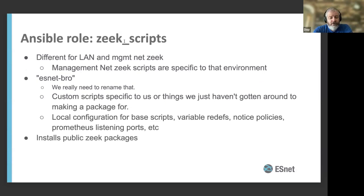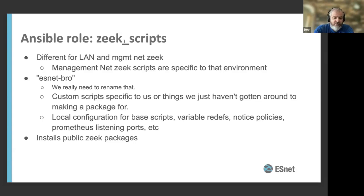Finally, the last role installs the Zeek scripts. It feels like maybe this should have gone into the other Zeek role, but there's a lot of different customization depending on where on the network the systems are. The management Zeek scripts are so specific — they really don't see that much traffic, so you can be more strict about what they see and build custom scripts for that. The main repo is called ESNet Bro — which we still need to rename. This contains all custom scripts specific to us, local configuration for base scripts, redefinition of variables, notice policies, listening port for Prometheus and other telemetry. It also installs any public Zeek packages that we use that don't require any custom code.